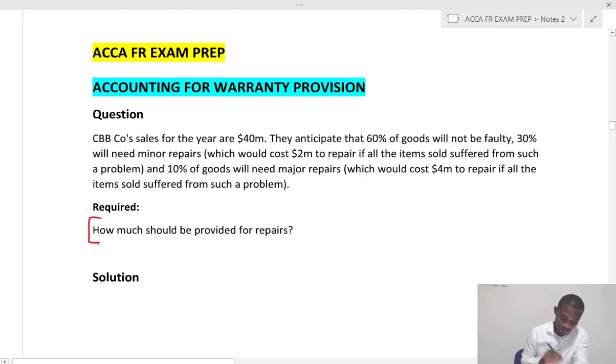Always we start with a requirement. How much should be provided for repairs? So CBB Co sales for the year are 40 million. They anticipate that 60% of goods will not be faulty.